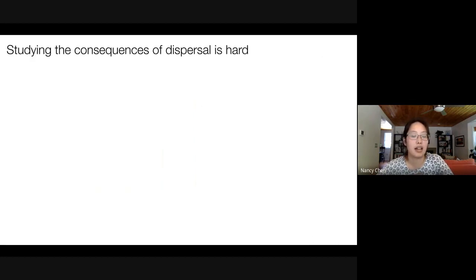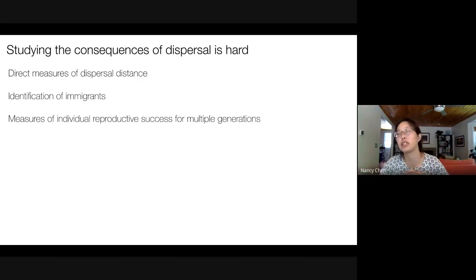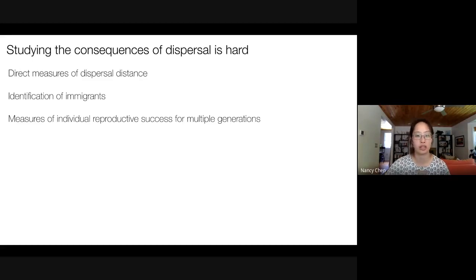The problem is that studying the consequences of dispersal can be really difficult. In an ideal scenario, you would want direct measures of dispersal distance. A lot of studies don't have the ability to actually track individual movements and therefore have to make inferences about dispersal distance from molecular markers. Ideally, you would want to be able to identify immigrant individuals into your study population, and if you're interested in fitness consequences, you need the ability to accurately measure reproductive success for individuals across multiple generations.